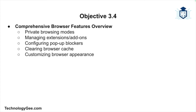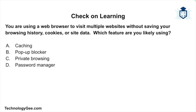That wraps up our overview of essential browser features. We've covered everything from private browsing and managing extensions to configuring pop-up blockers, clearing cache, and customizing appearance. Mastering these features not only improves your browsing experience but also ensures you're ready for the CompTIA Tech Plus exam. So with all that said, let's do a check on learning.